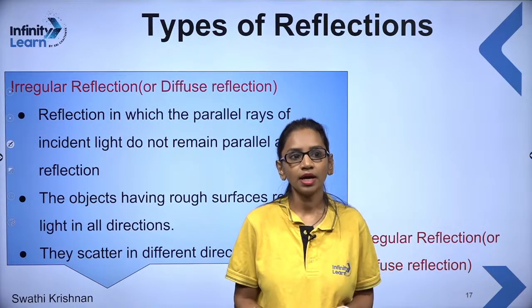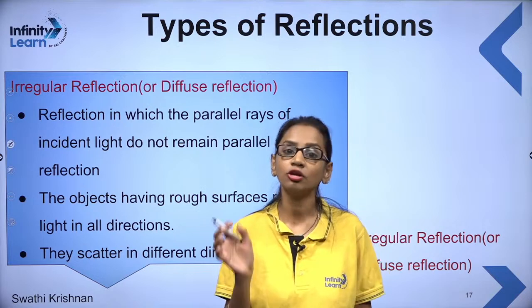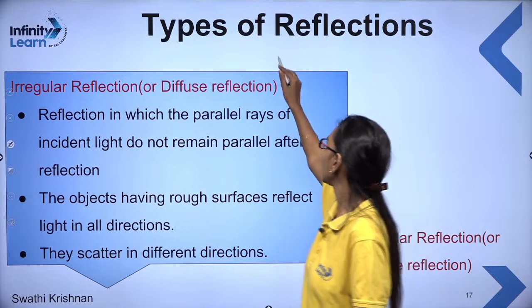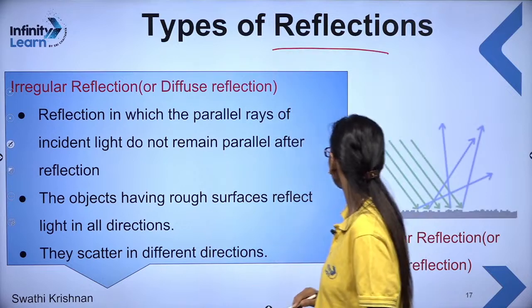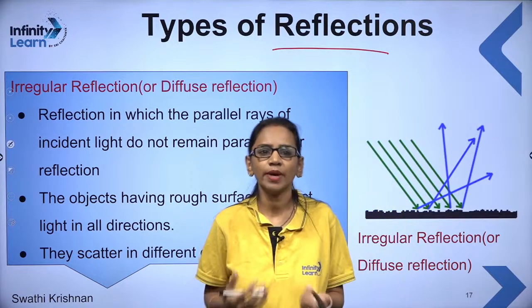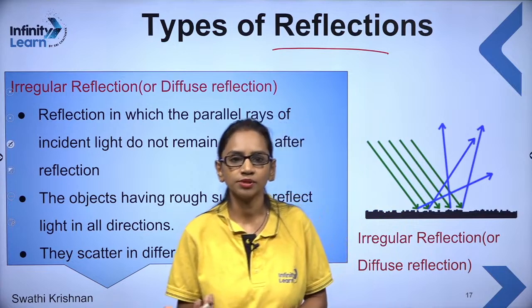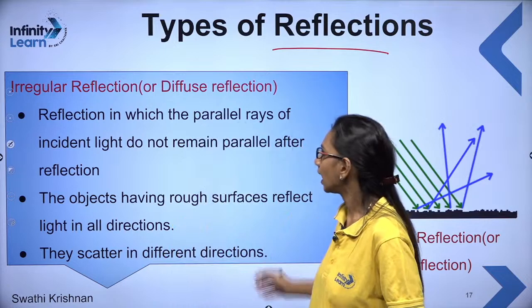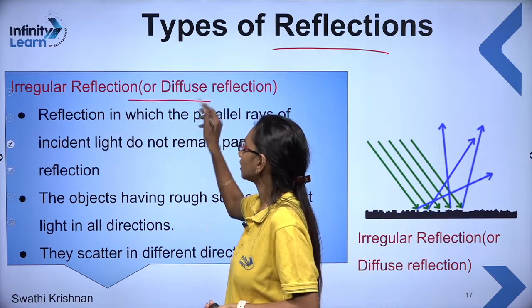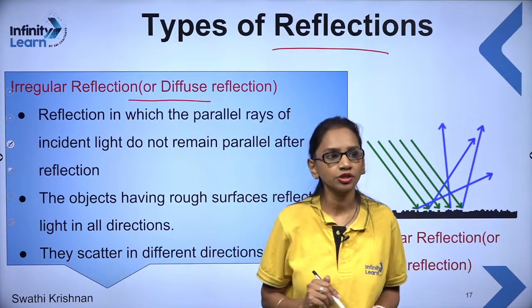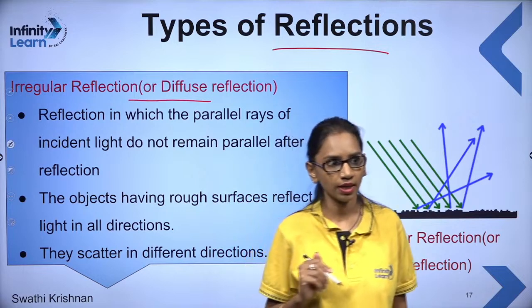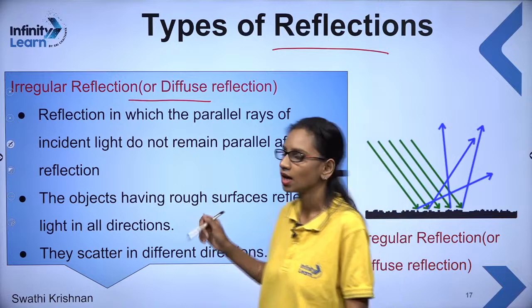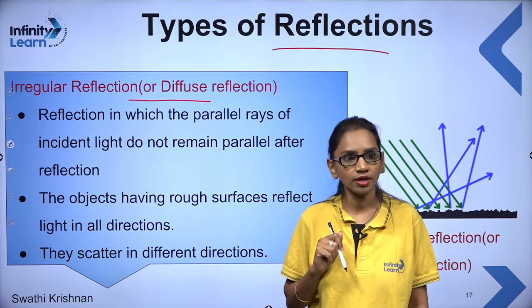We have studied reflection and the laws of reflection. Let us also study the types of reflection. Irregular reflection is also called diffused reflection. In diffused reflection, when parallel incident rays hit a rough reflecting surface, the reflected rays are not parallel — they scatter in different directions. Objects with rough surfaces reflect light in all directions.